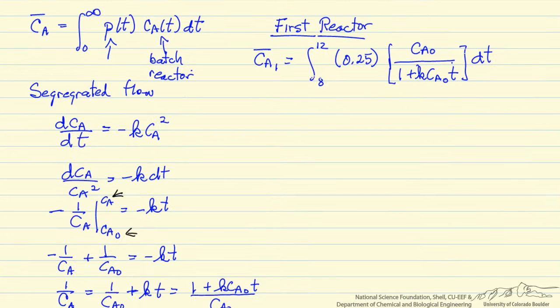So we are going to calculate the exit concentration from this first reactor. This is constant. CA0 is constant. Integration of this term denominator gives us a log term, and then we have to divide by this factor that is multiplying t inside that log term. And we are going to substitute the limits.